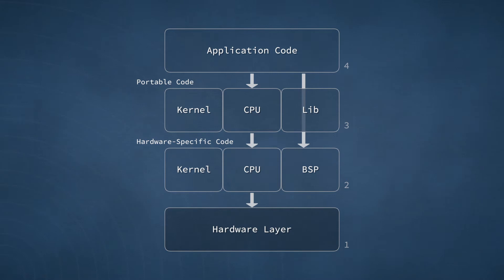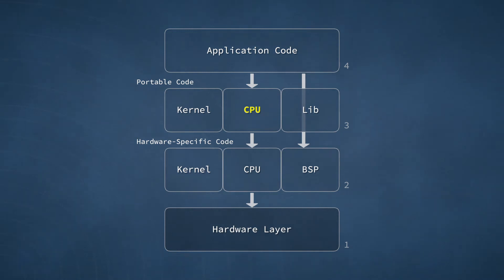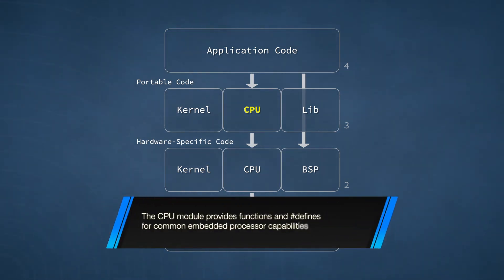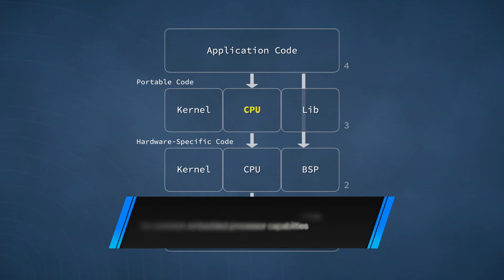Let's start with the CPU block. The code in this block contains a variety of declarations and definitions needed by the other parts of a Micrim OS-based project, including the kernel itself. The CPU block can be thought of as utility code. For example, it contains data-type definitions and macros for enabling and disabling interrupts to create critical sections.